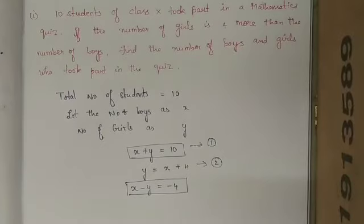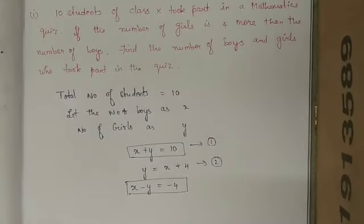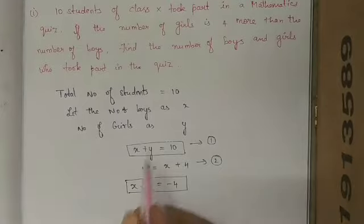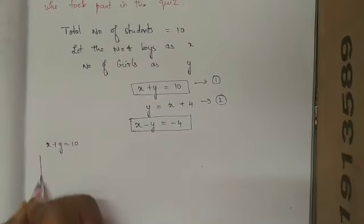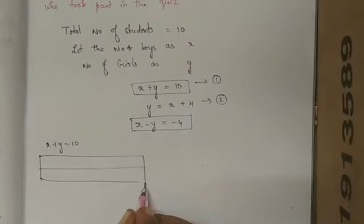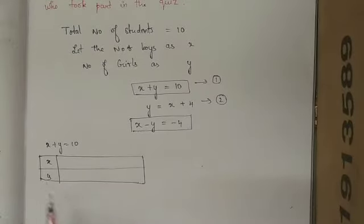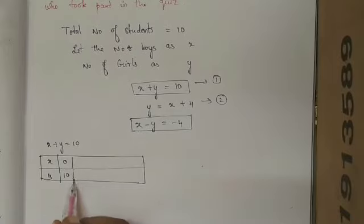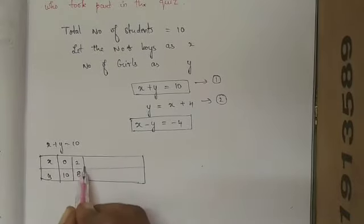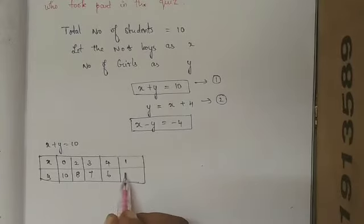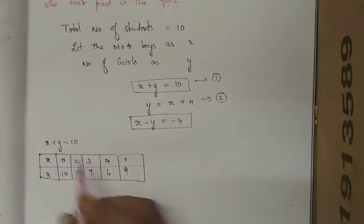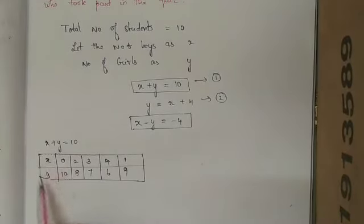Now these two equations need to be solved to get the values of x and y. Let us take the first equation x plus y equals 10 and frame a tabular column. X value and Y value: if x is 0, y is 10; if x is 1, y is 9; if x is 2, y is 8; if x is 3, y is 7; if x is 4, y is 6. The tabular column for the first equation is ready.